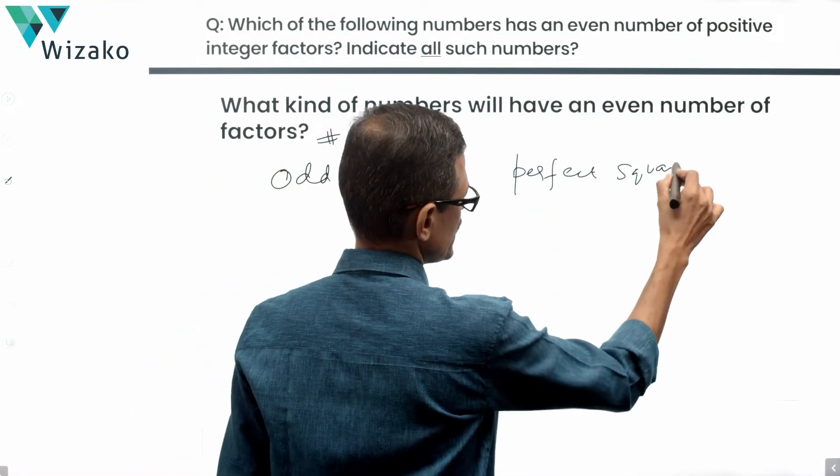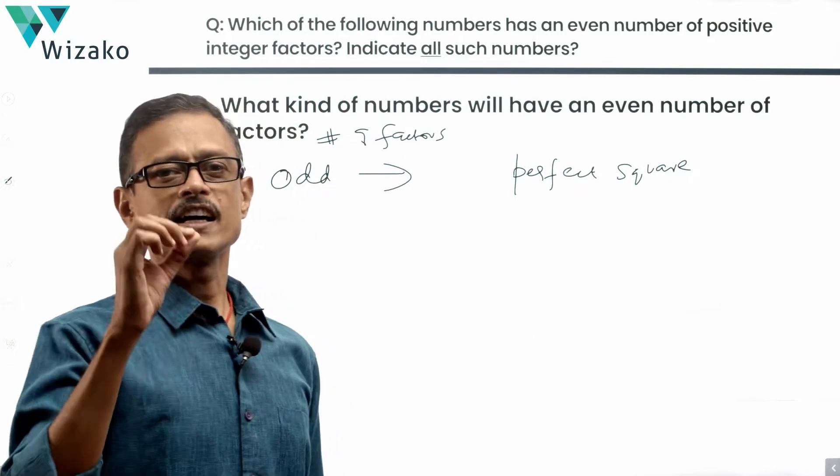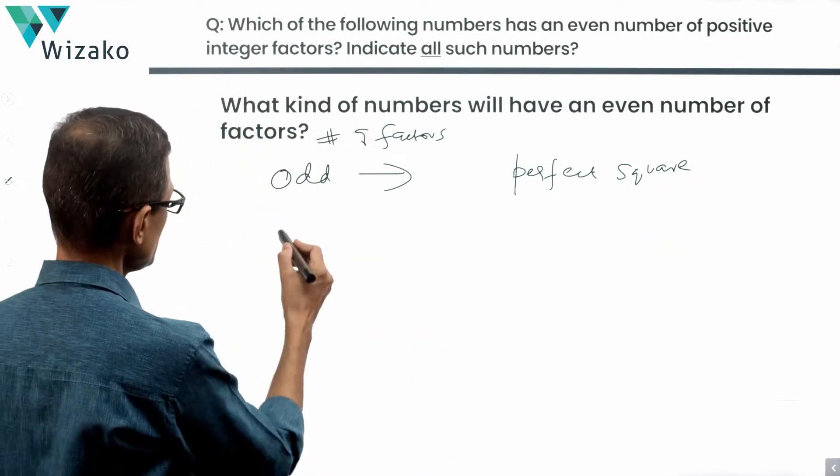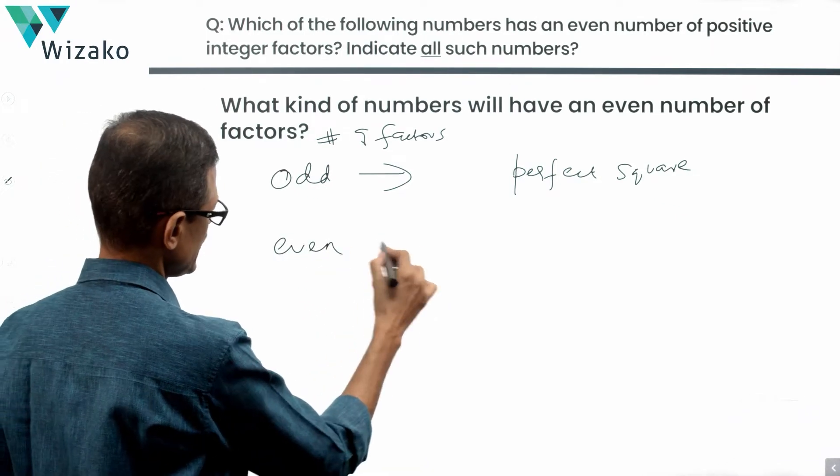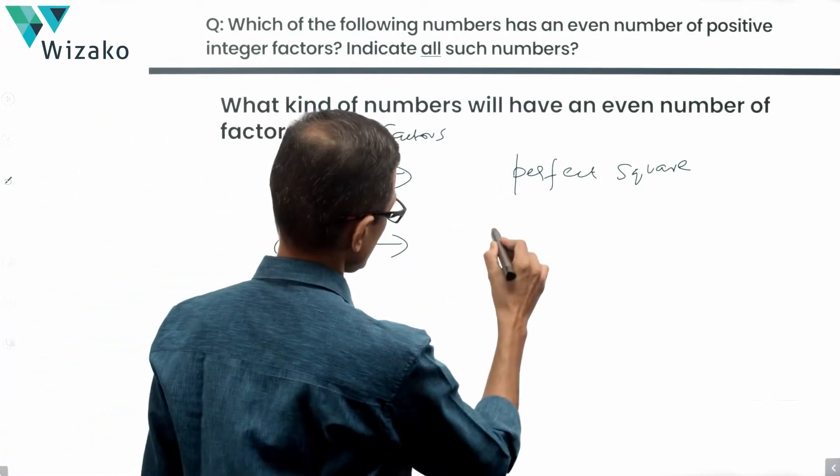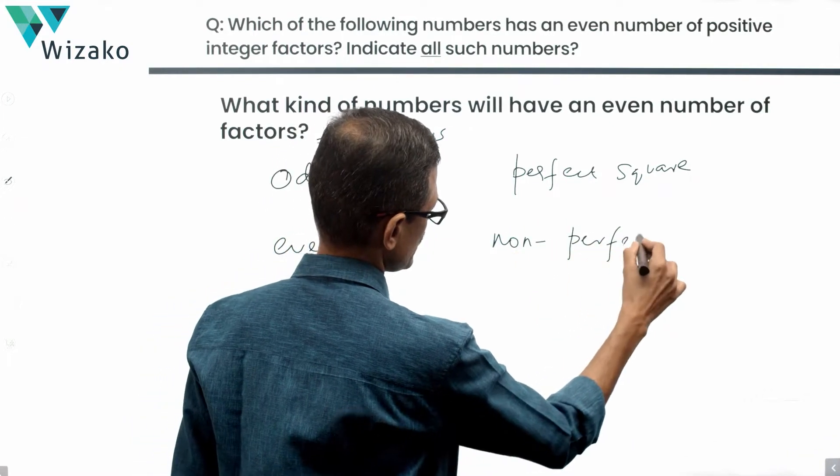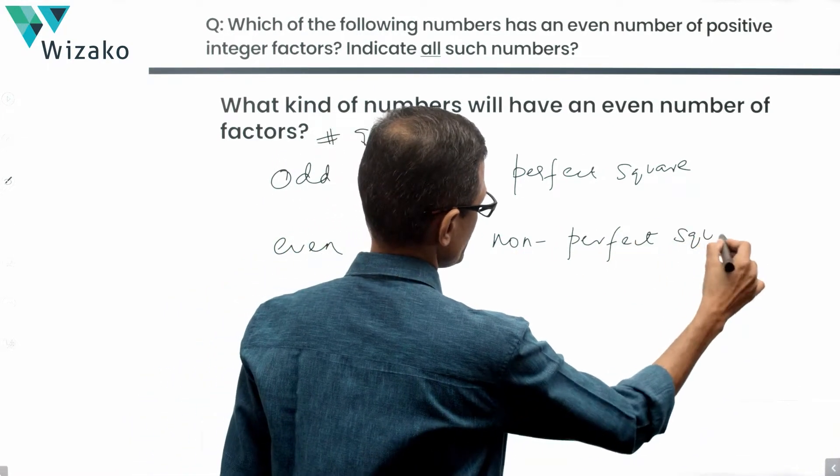So we're talking about any perfect square will have an odd number of positive integer factors. So if a number has got even number of positive integer factors, that number has to be a non-perfect, it's not a perfect square. It's not a perfect square. That's what we are looking at.